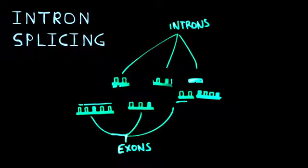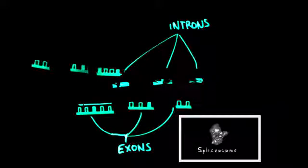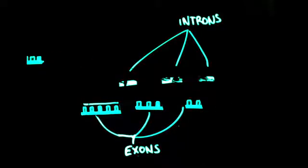During intron splicing, a complex made of proteins and RNA known as a spliceosome removes all the introns from the mRNA and connects the coding exons.